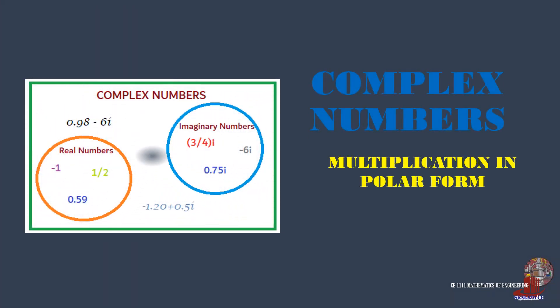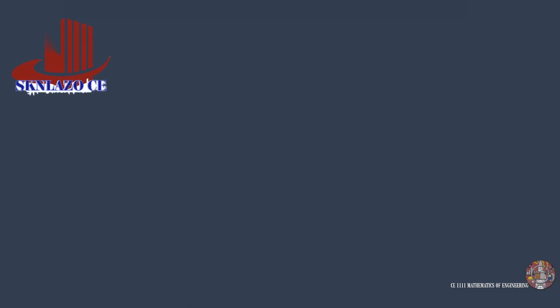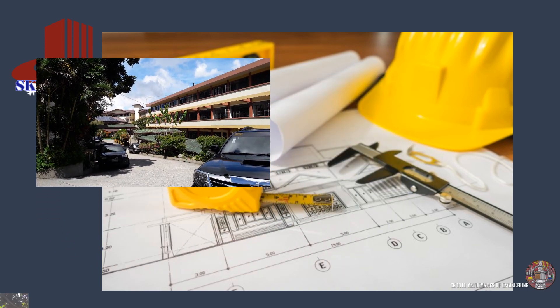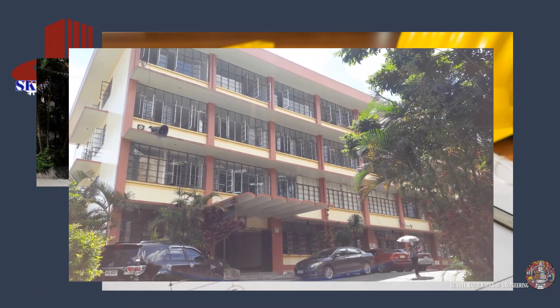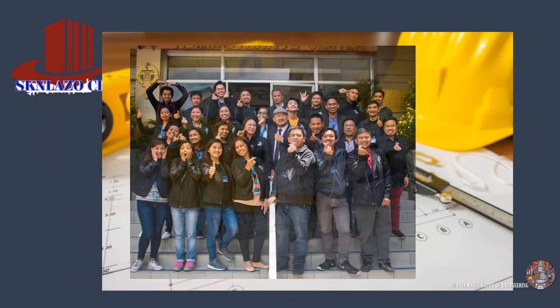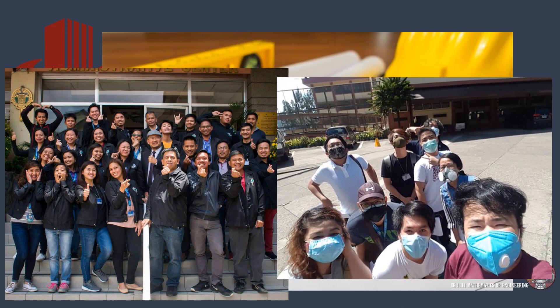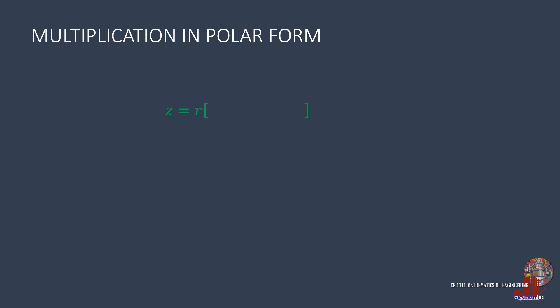Multiplying complex numbers in polar form is quite easy. Learn how to do it here in Mathematics of Engineering. A complex number in polar form has the expression r times the quantity cosine of theta plus i times sine of theta, where r is the modulus or the absolute value, and theta is the argument.